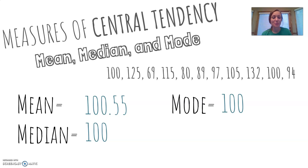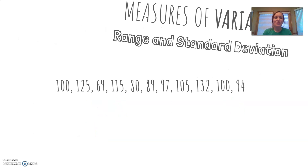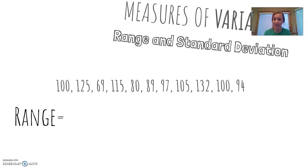I chose data points that could represent IQ scores so we can use that for a later example. For measures of variation: can you find the range? Find the highest and lowest score and subtract them. You should have found that the range is 63 — there are 63 data points between the highest and lowest score.